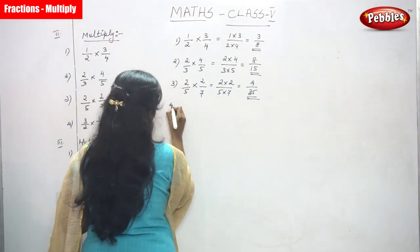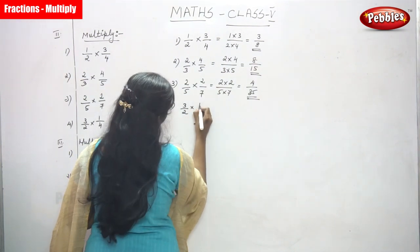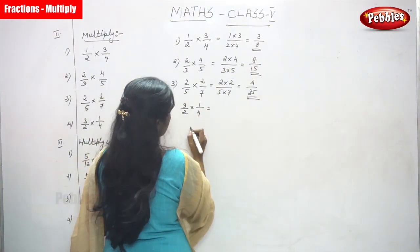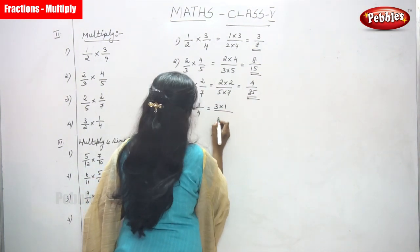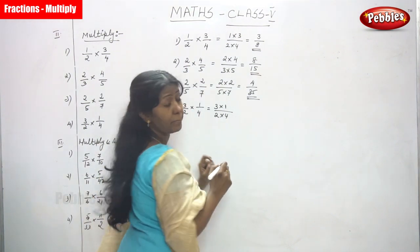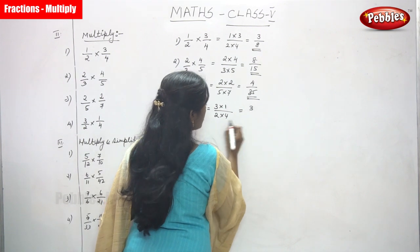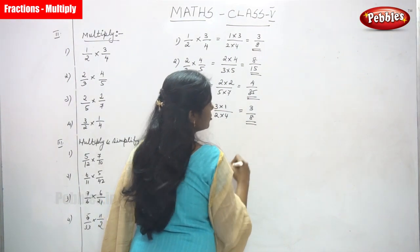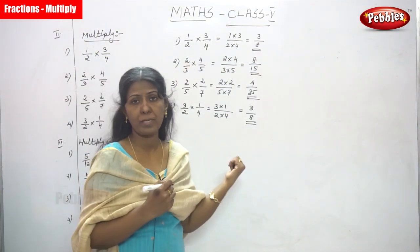Next sum, 4th sum. That is 3 by 2 into 1 by 4. So, both are fractions. So, 3 into 1 divided by 2 into 4. 3 into 1 divided by 2 into 4. 3 into 1, you can get 3. So, 2 into 4, you can get 8. So, the answer is 3 by 8. So, this is the way of solving the problem.